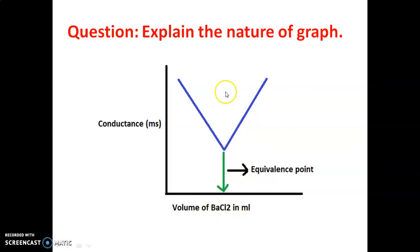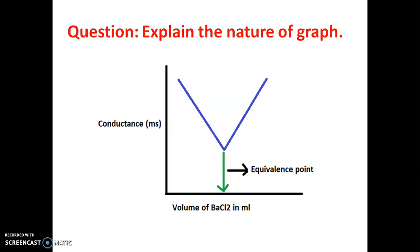The reaction is complete. Now, excess barium chloride is present, which is in the ionic form as Ba2+ and 2Cl−. Therefore, in ionic form, the conductance increases. After the equivalence point, the conductance increases because excess barium chloride contains free ions — Ba2+ and 2Cl−. Free ions means more mobility, and more mobility means more conductance. Hence, the conductance increases after the equivalence point. That is the nature of the graph.